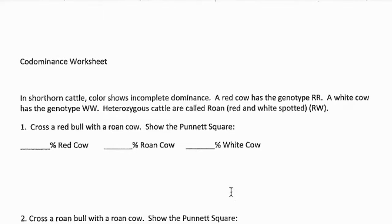On your homework, let's do number one together. In shorthorn cattle, color shows codominance. A red cow has the genotype big R big R; a white cow has the genotype big W big W; and heterozygous cattle are called roan — they have red and white spots — with the genotype big R big W. We're going to cross a red bull with a roan cow and find what percent of offspring will be red, roan, or white.